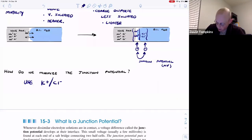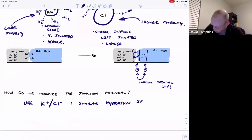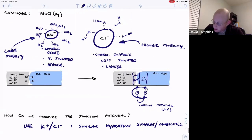Potassium chloride have similar hydration spheres and similar mobilities, which means that we'll have very little charge separation because those ions are going to migrate at about the same rate.